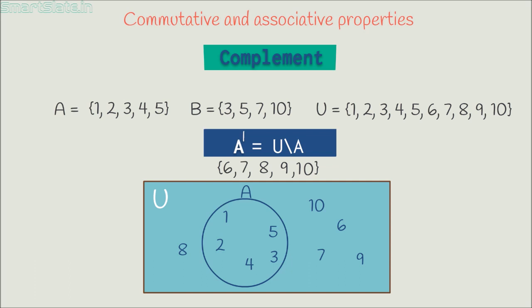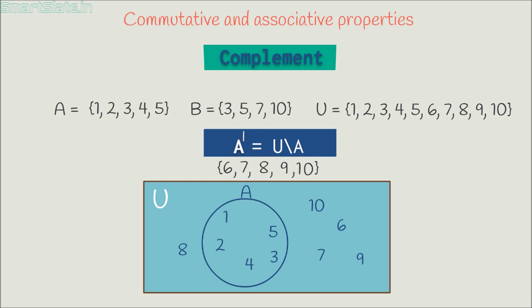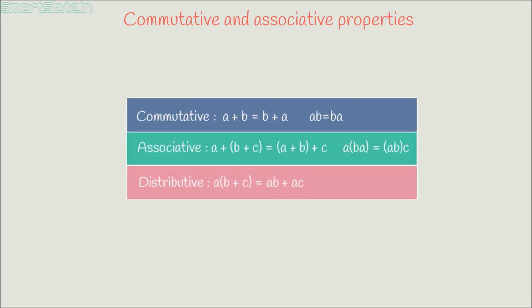Now we know the basic operations on sets. Let's try to find out whether these operations obey basic arithmetic properties like commutative property, associative property and distributive property. I hope you remember these properties — if not, let's have a quick glance at this table. Let's verify if these properties hold true with sets. The first one we are going to verify is the commutative property of union and intersection of sets.